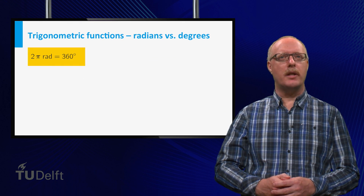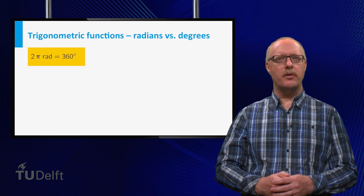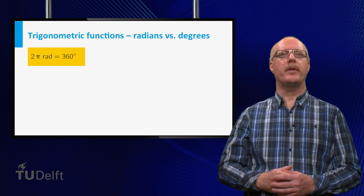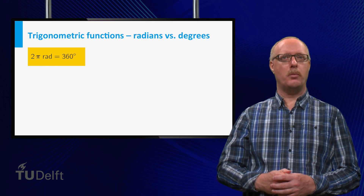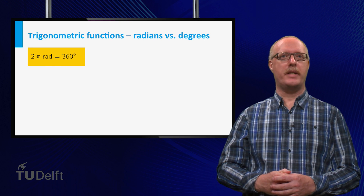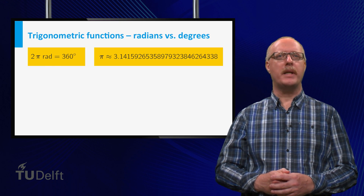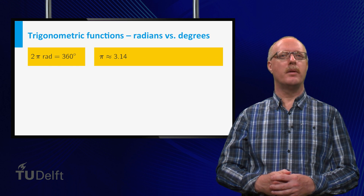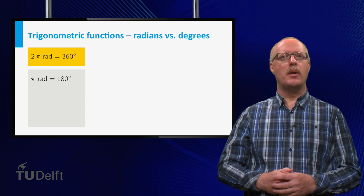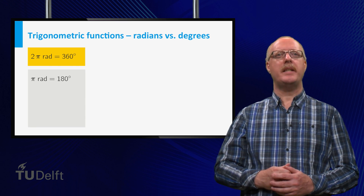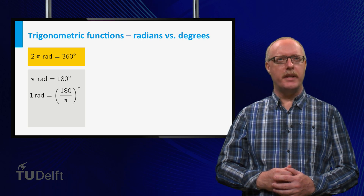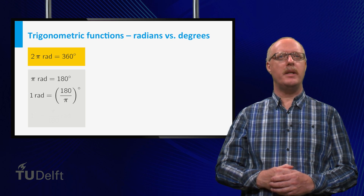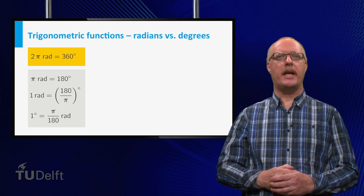In mathematics, angles are usually measured in radians instead of degrees. The angle of a complete revolution contains 360 degrees, which is equal to 2π radians. The number π is quite complicated and is close to 3.14. So we have π radians equals 180 degrees. This implies that one radian equals 180 over π degrees, and that one degree equals π over 180 radians.